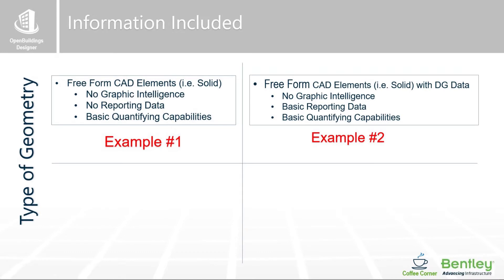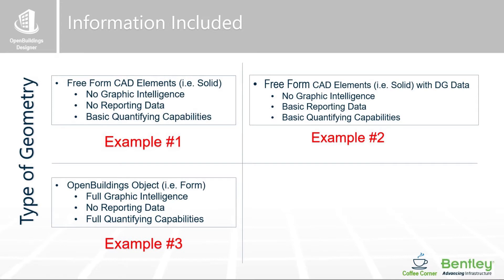What we can then do is add some data group information — parameters or attributes — to these objects. These might give you the ability to start looking at reporting. These attributes or parameters may not necessarily drive the graphics, but they might give you basic reporting of information like quantities, counts, and things like that. We've got graphical illustrations going along with this.